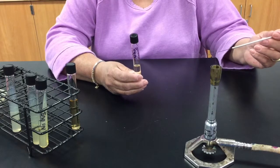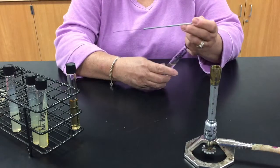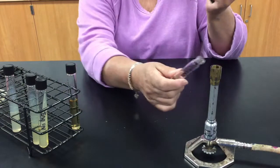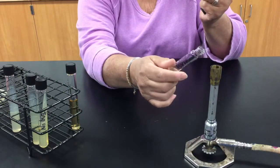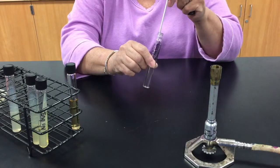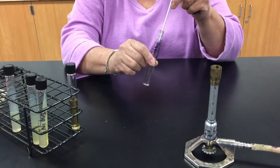So I've got some organism or pretend organism on my loop. I would remove the cap from the broth, flame the lip of the tube for just a moment, and then I would go into the tube with my loop and just give it a little swish.